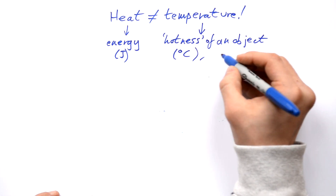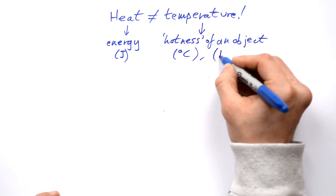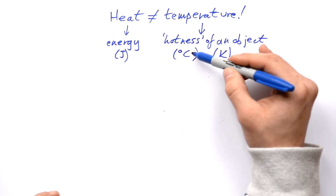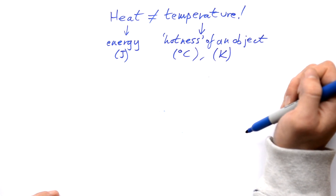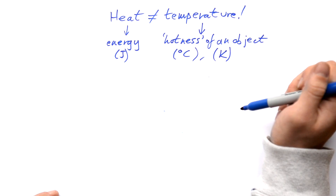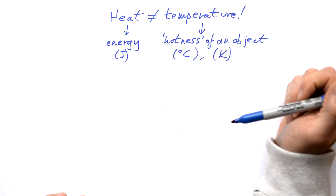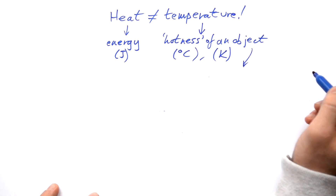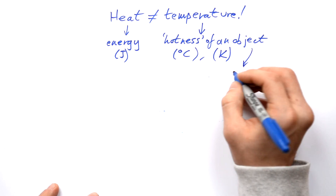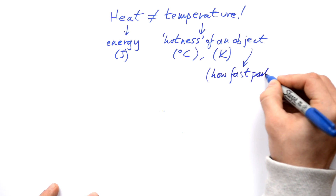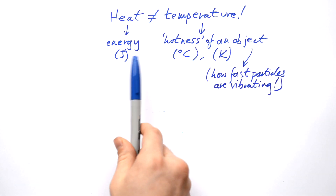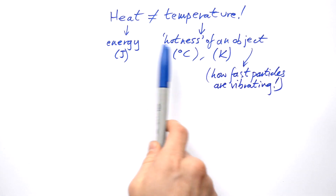At A-level we measure temperature in Kelvin. These units are very similar but Kelvin is far superior because we can do more with it. For now we're just going to stick with degrees Celsius. If you really want to know what temperature actually is, it's how fast particles are vibrating in an object. The more heat you put into something the higher the temperature gets, but they are not the same thing.